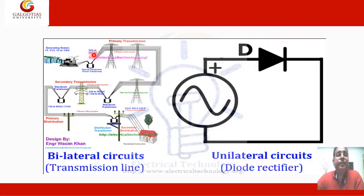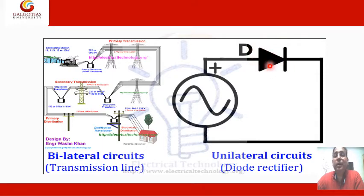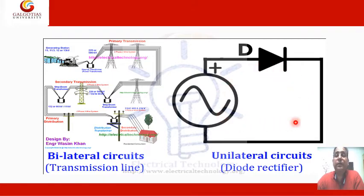Here you can see photos of unilateral and bilateral circuits. For the unilateral circuit, the diode is the best example — it allows current flow in one direction only. The diode symbol has a triangle representing p-type semiconductor material and a bar representing n-type semiconductor material. It allows current flow in forward bias (clockwise direction) and does not allow current in reverse bias. The transmission line circuit acts as a bilateral circuit.